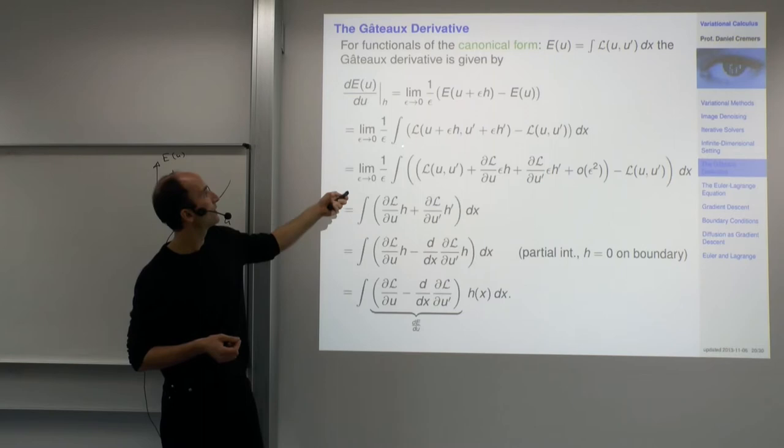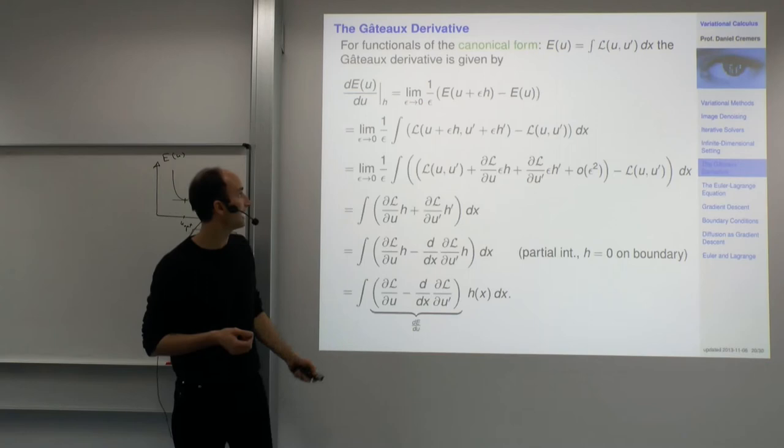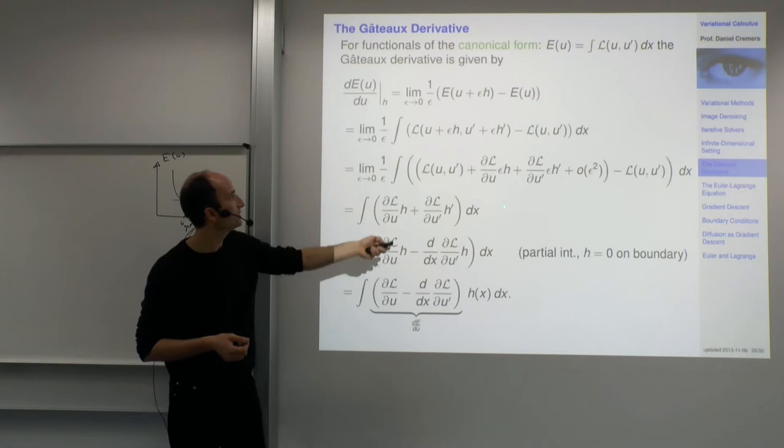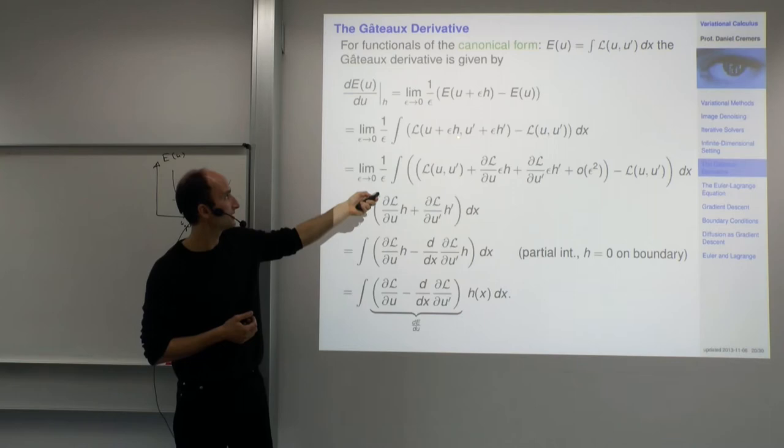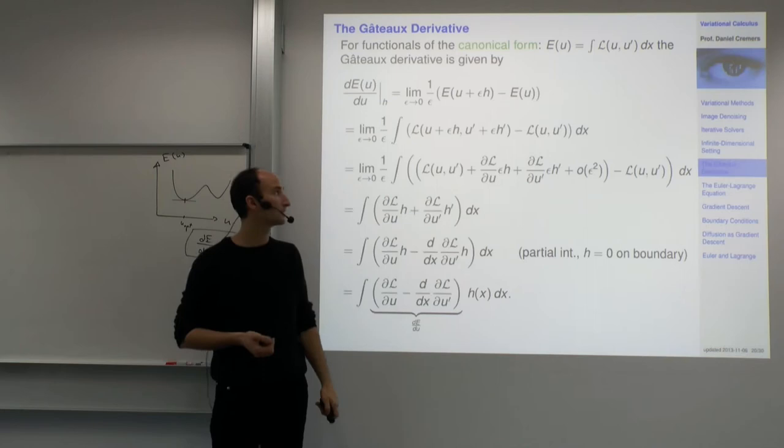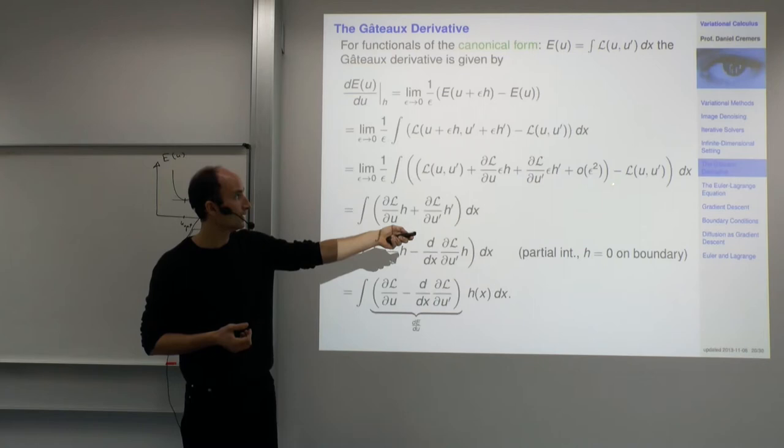Since we want to consider small perturbations, the natural thing to do is use a Taylor expansion to consider small offsets epsilon h. We have the Taylor expansion in two arguments. This is a first-order Taylor expansion, since epsilon goes to zero — terms of order epsilon squared are neglected.